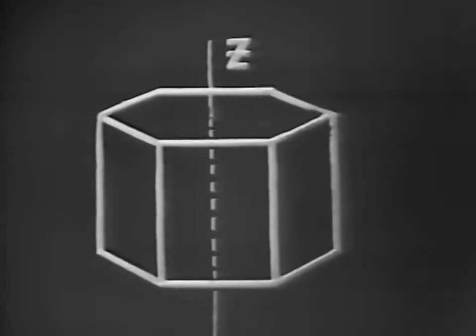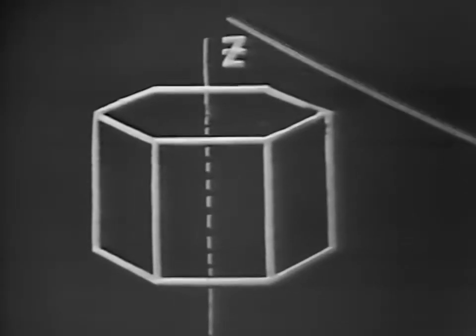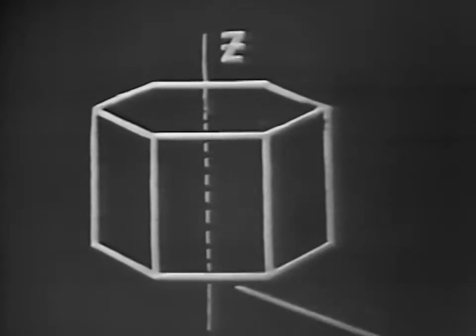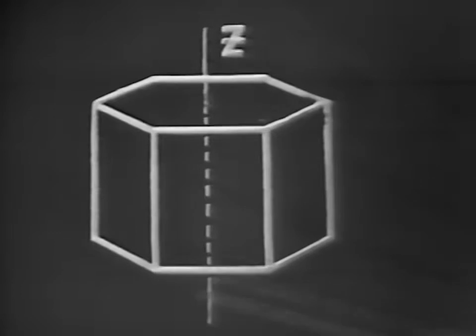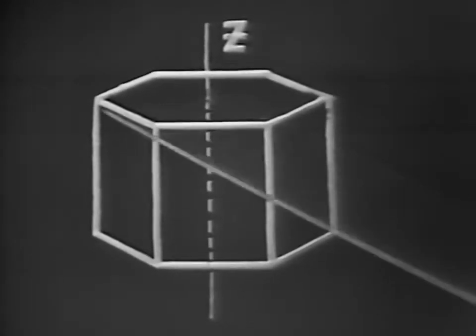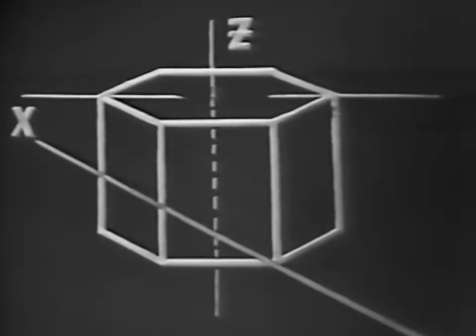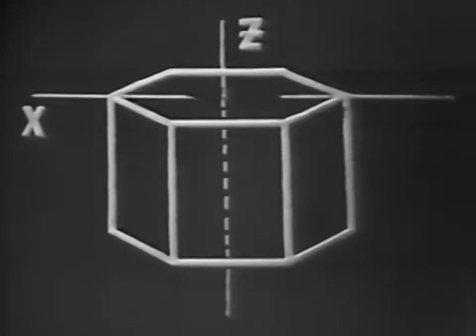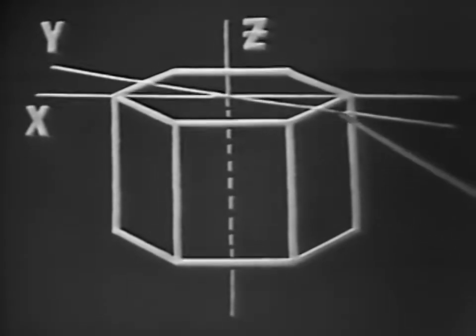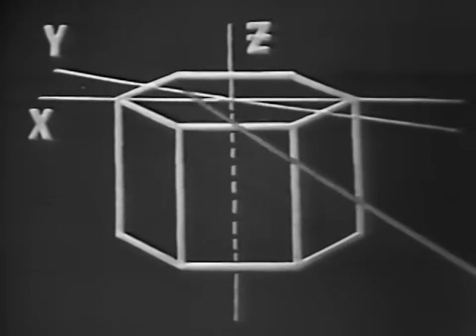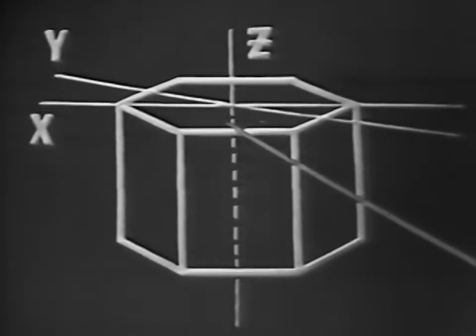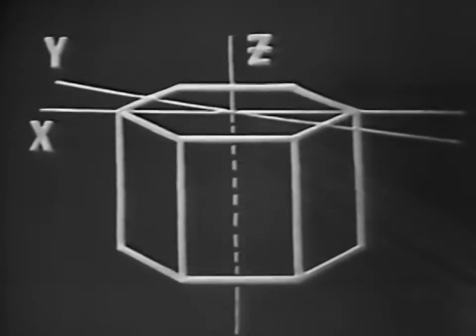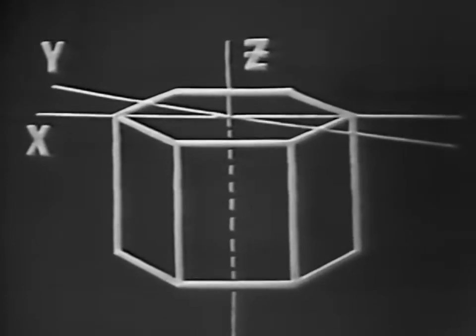Let's look at this drawing of a crystal and see the exact location of the crystal axes. The axis passing from point to point — end to end, directly through the crystal — is known as the Z-axis. The axis passing through the corners of the crystal is known as the X-axis. The axis perpendicular to the faces of the crystal is known as the Y-axis. Remember, these are only imaginary lines used as reference points when cutting the crystal.